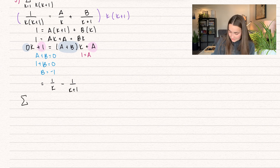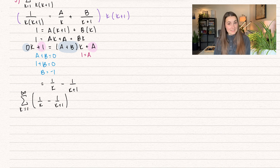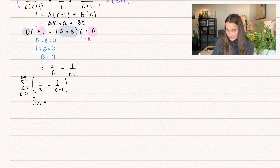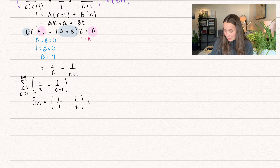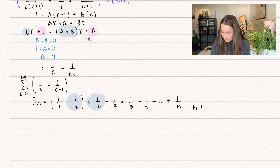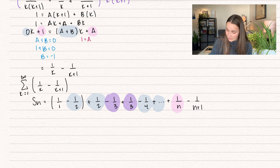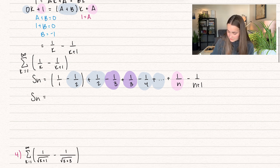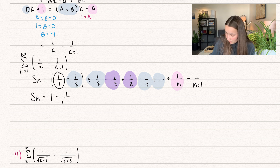We can replace that in our series: the summation from k equals 1 to infinity of 1 over k minus 1 over k+1 — that looks much more like a telescoping series. Taking the partial sum: k=1 gives 1/1 minus 1/2, plus 1/2 minus 1/3, plus 1/3 minus 1/4, all the way down to n: 1/n minus 1/(n+1). Minus 1/2 plus 1/2 cancels, minus 1/3 plus 1/3 cancels, and so on. Our partial sum formula is 1 minus 1 over n plus 1.